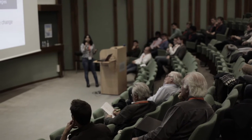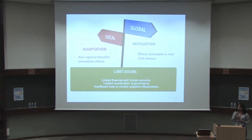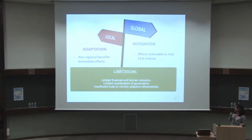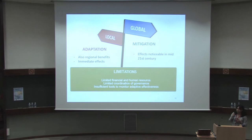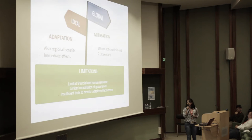Both can help us reduce the risk of climate change. Mitigation can work at the global level, and its effects are only noticeable after a few decades. While adaptation policies can work at local and regional levels with more immediate effects. But both pathways have common limitations — limited financial resources, limited human resources, and sometimes uncoordination from governments at the international scale.